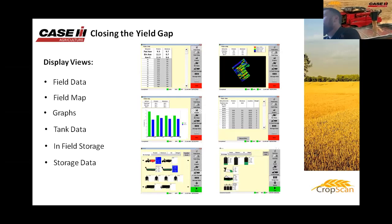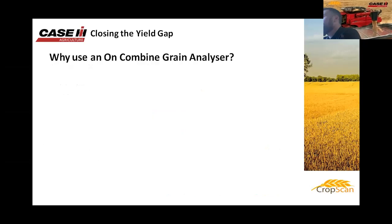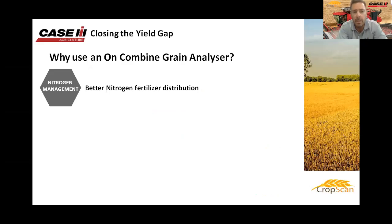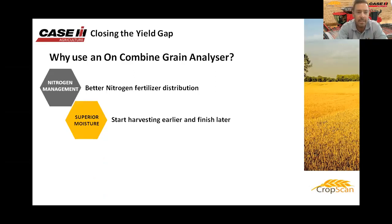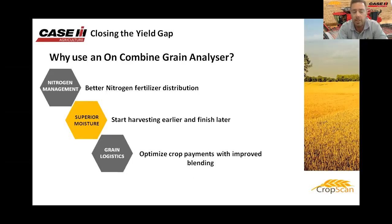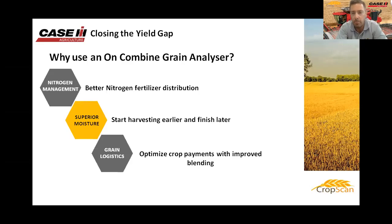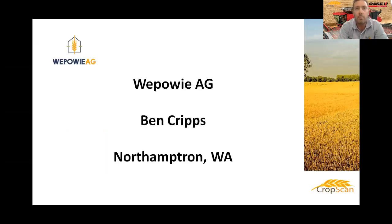So why use an on-combine grain analyzer? There are really three benefits. Firstly, nitrogen management — the CropScan 3300H gives the ability to develop better nitrogen strategy plans, feeding the crop in different zones depending on nitrogen uptake and availability. Secondly, superior moisture management — the ability to start earlier or finish later to pick up harvest efficiency. And finally, grain logistics and optimizing crop payments with improved blending — knowing what you're pulling off the field to better market and manage grain.